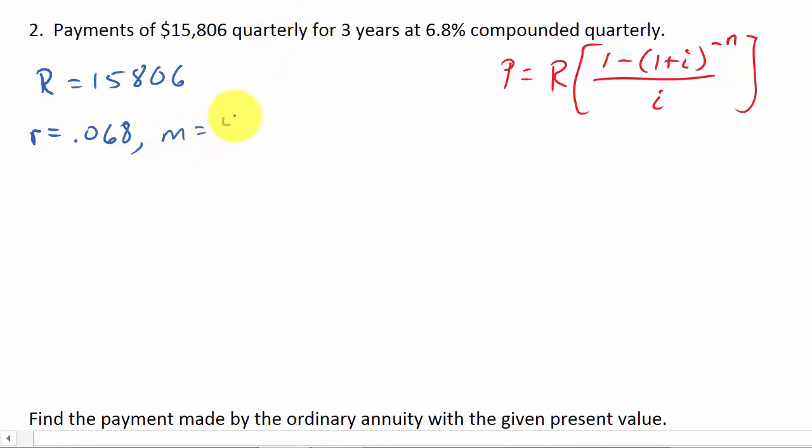And so now we can get I. Let's write R over M, which is 0.068 over 4. And let's see what kind of decimal that's going to give us. Divided by 4. So that's 0.017. And then N is M times T, so it's going to be for three years. M in this case is 4, and that's for three years. And so N is 12.